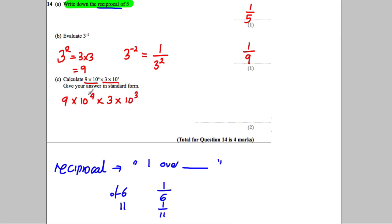Now with multiplication, you can do multiplication in any order. So I'm going to have the 9 first, then multiply it by the 3, then multiply it by the 10 to the 4, and multiply it by the 10 to the 3.